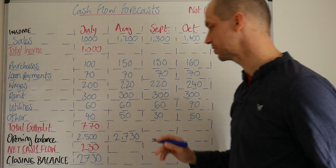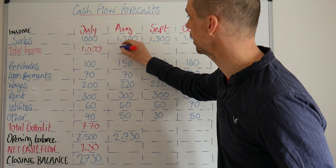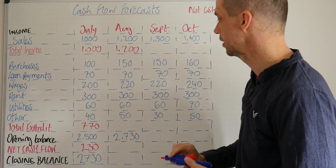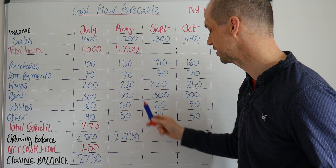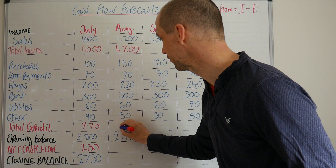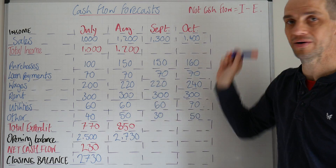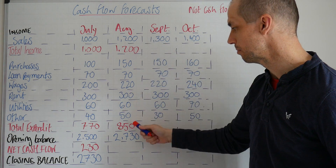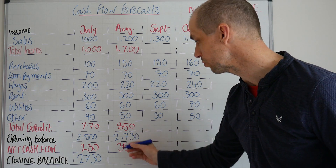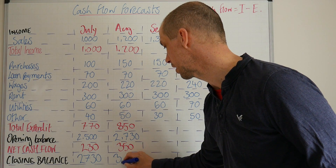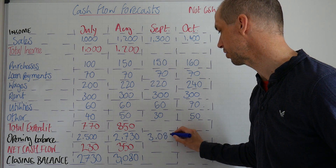Adding 230 to the opening balance gives us 2730 pounds. That 2730 then becomes our opening balance for the next month. For month two we've got 1200 pounds income, and expenditure totalling 220, 440, 740, 800, 850 — so 850 pounds total expenditure. Net cash flow is 1200 minus 850, which gives us 350 pounds.